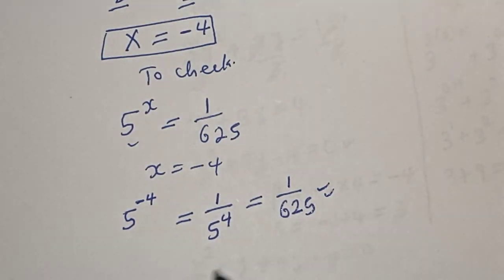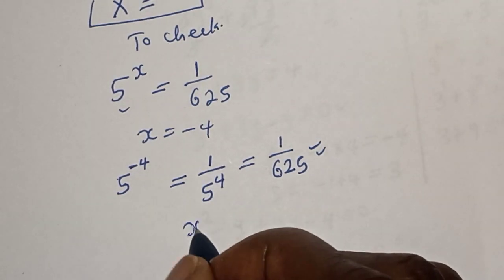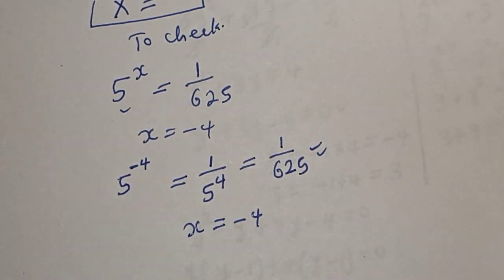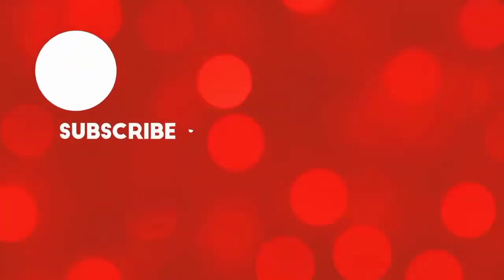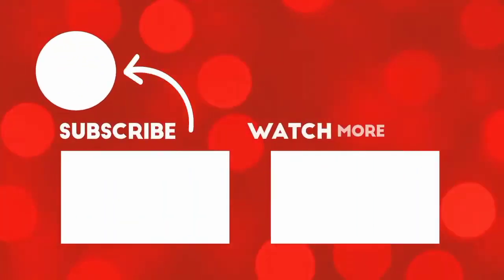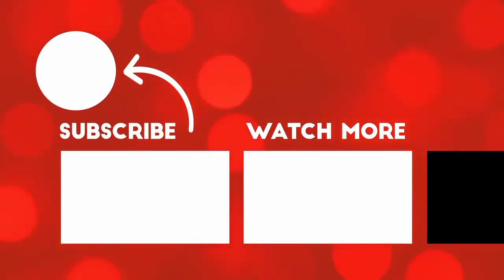This is equal to 1 over 5 raised to power 4, this is equal to 1 over 625, which satisfies the given equation at x is equal to minus 4. Before you leave, like, share, comment and subscribe. Thank you, bye bye.